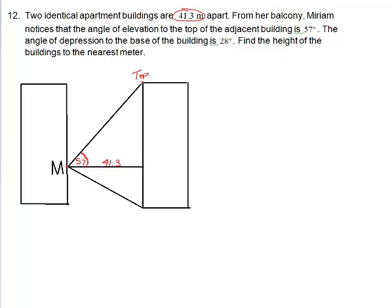And then it says the angle of elevation to the base of the building. So Miriam's angle of elevation to the base. So the angle of elevation, again, is along the horizontal and the line of sight, so it's right there. So her angle of elevation is 28 degrees right here.